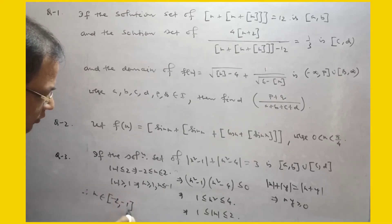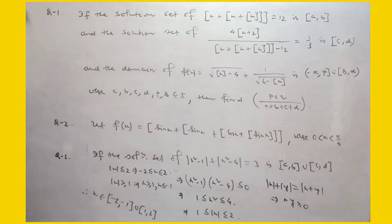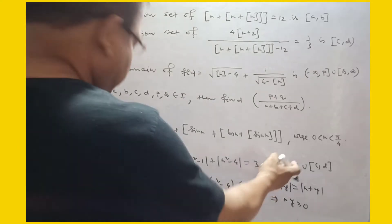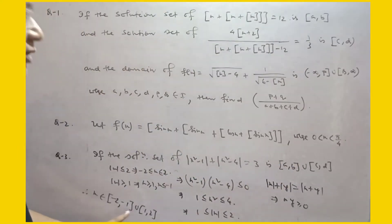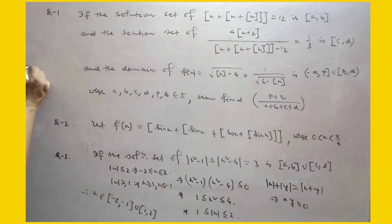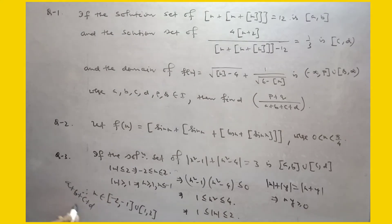Taking the common values, the solution set is [−2, −1] union [1, 2]. So A = −2, B = −1, C = 1, D = 2. Therefore A + B + C + D = 0.